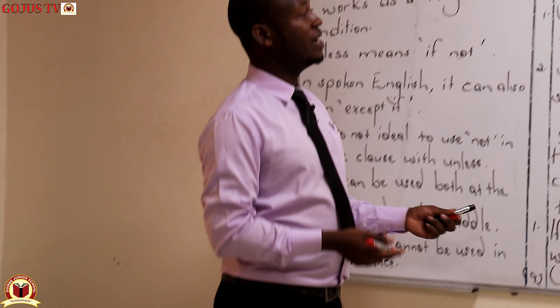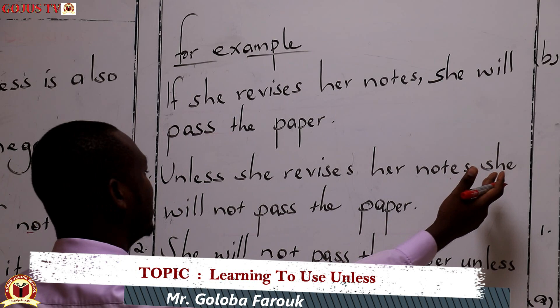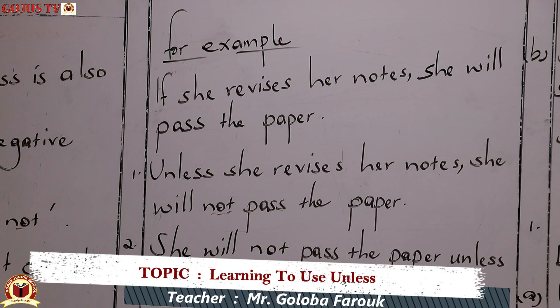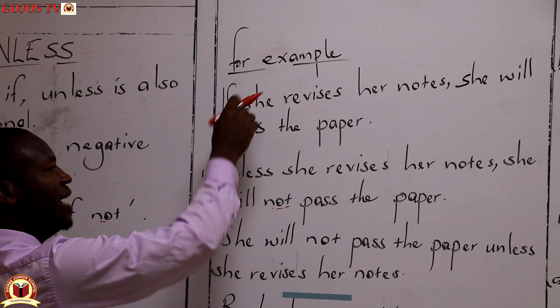For example: 'If she revises her notes, she will pass the paper.' If we begin with 'unless', we shall say: 'Unless she revises her notes, she will not pass the paper.' A candidate may ask: how do you arrive at this? The first way of phrasing this can be using the spoken mode of 'except if': 'If she revises her notes, she will pass the paper.'